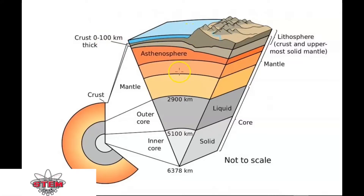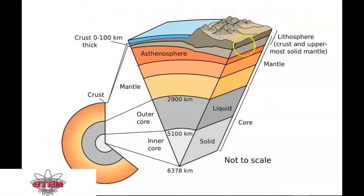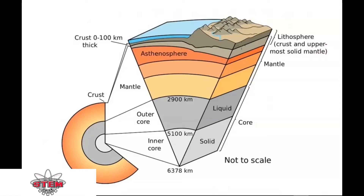Below the crust is the mantle. The mantle itself is split up into different layers. The uppermost part of the mantle is solid, and it combines with the crust to form the lithosphere. The lithosphere is the upper part of the Earth, and it is split up into different pieces.